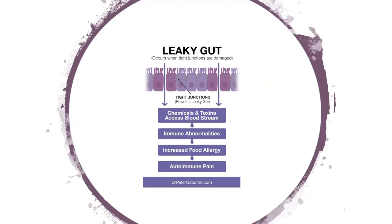So now if those barriers are compromised, this is what happens — we get a leaky gut. When those barriers are compromised, things that were in your gut lumen — particles from bacteria, fungus, potential parasites, potential proteins that are dangerous to your body, things that are in plants — even when we eat healthy foods there are dangerous things in them. If our gut barrier is breached, those dangerous things can leak in. These chemicals and toxins access your bloodstream, creating immune abnormalities, increased food allergies, and autoimmune conditions.